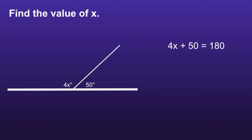We want to solve for x. The first step is to undo any addition or subtraction. We can see that there is addition — they are adding 50 — so we want to do the opposite. The opposite of adding 50 is subtracting 50, and we're going to do this on both sides of the equal sign. On the left side, we'll be left with 4x, and 180 minus 50 is equal to 130. Now we have 4x is equal to 130.